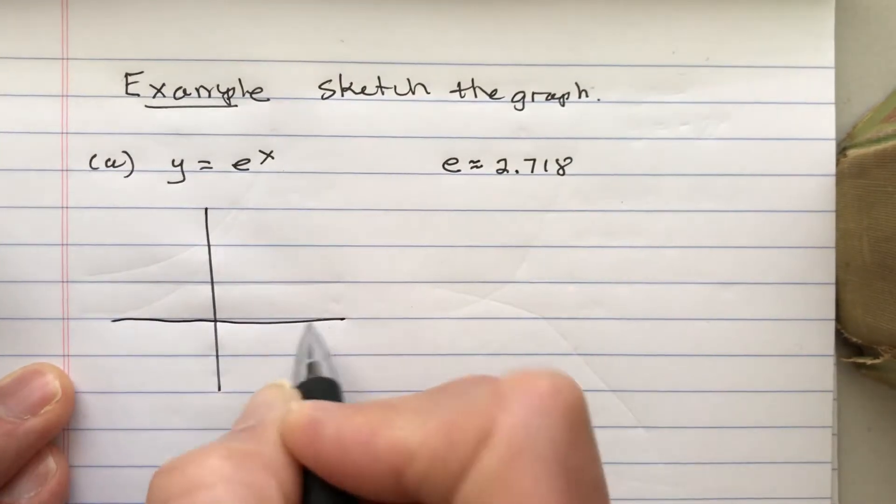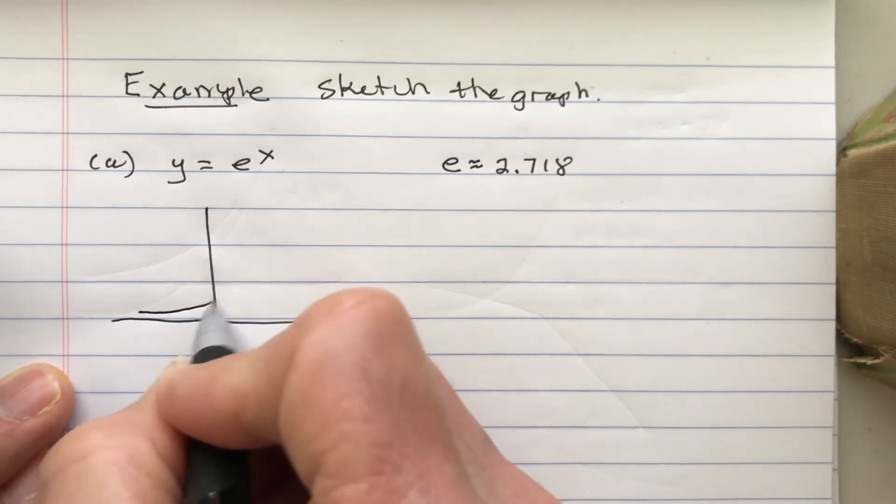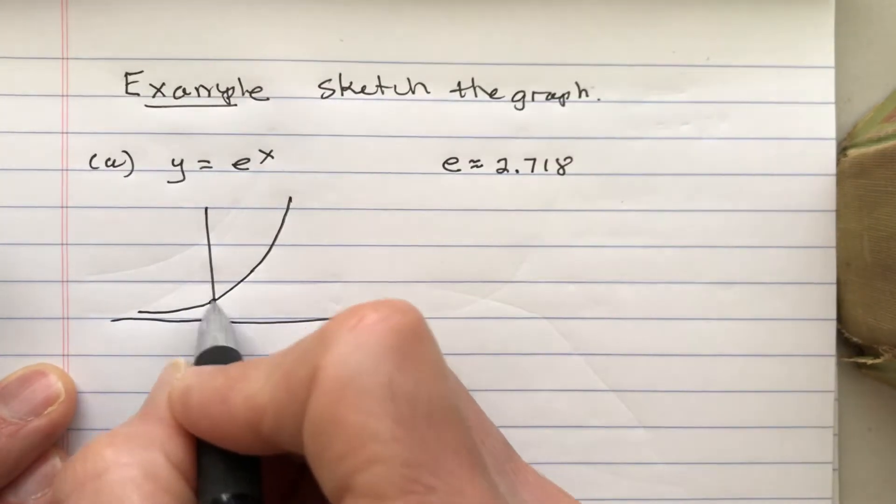Alright, but if you memorize what e to the 2x looks like, then you can... I'm sorry, if you memorize what y equals 2 to the x looks like, you can do this one.